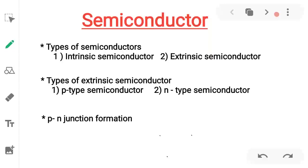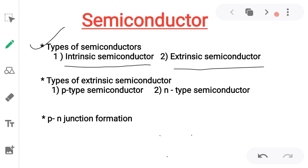Hello students, I'm Shweta Kulikani from the physics department. Today we discuss the continuation of the semiconductor second session. Today's discussion points are: types of semiconductor, intrinsic semiconductor, extrinsic semiconductor, types of extrinsic semiconductor, P type semiconductor and N type semiconductor, and third point: P and N junction formation.